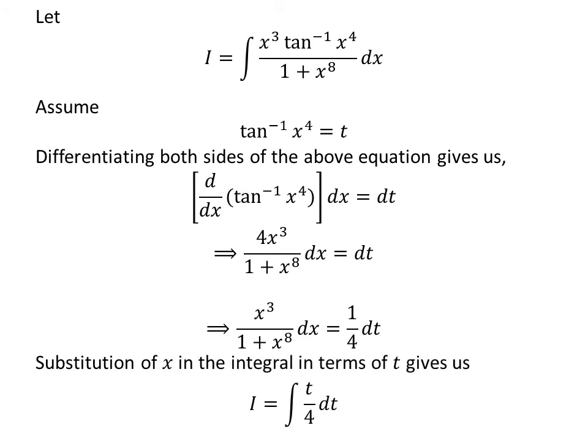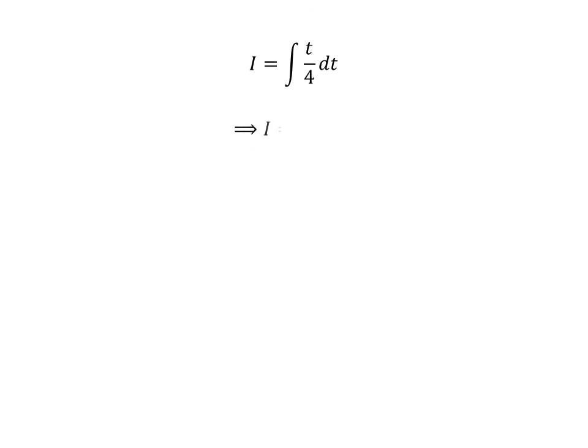In the integral i, let us substitute arctangent of x raised to the power of 4 by our assumed value t, and x cubed upon 1 plus x raised to the power of 8 times differential of x by 1 upon 4 times differential of t. So we get i is equal to the integral of t upon 4 with respect to t. We know the integral of t is t squared upon 2, so i is equal to t squared upon 8 plus capital C.